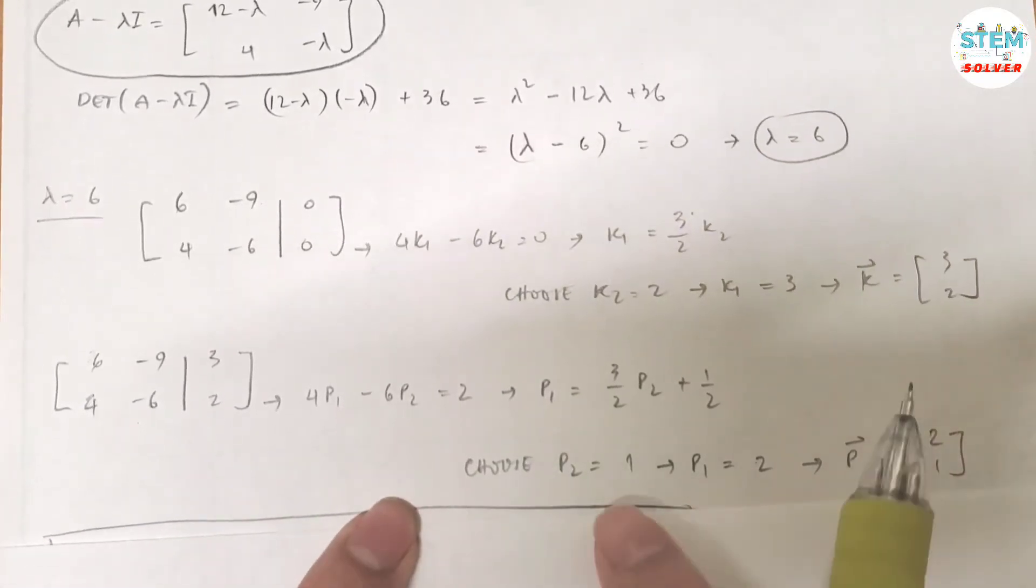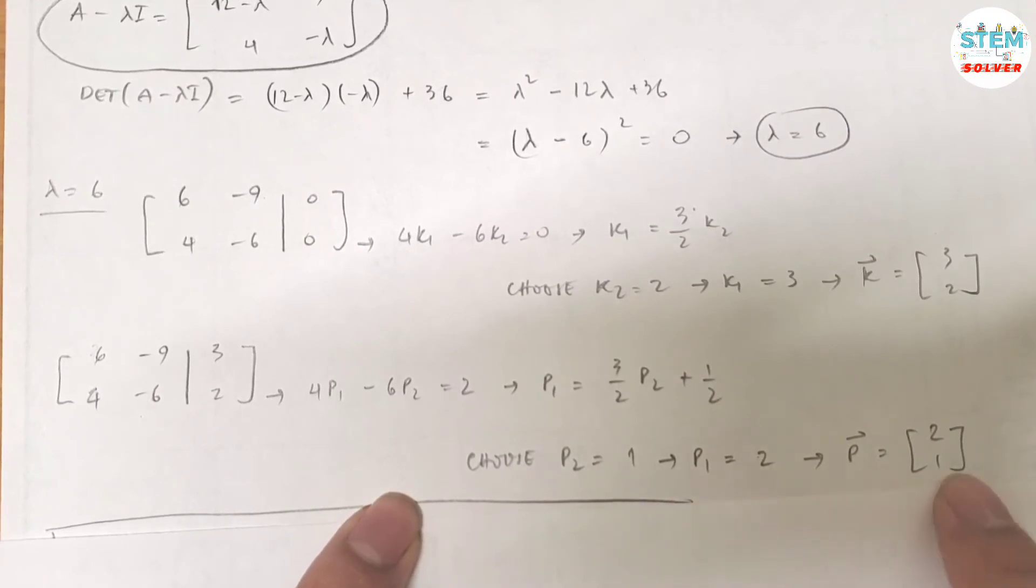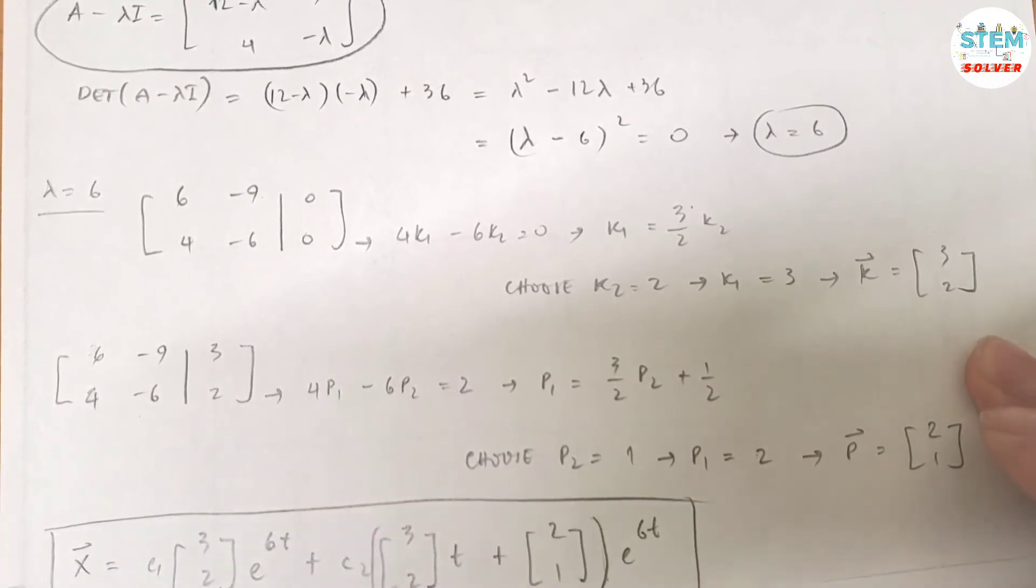Choose p2 equals 1, then p1 is 2, then my vector p is 2, 1. Now it's time to write our final answer.